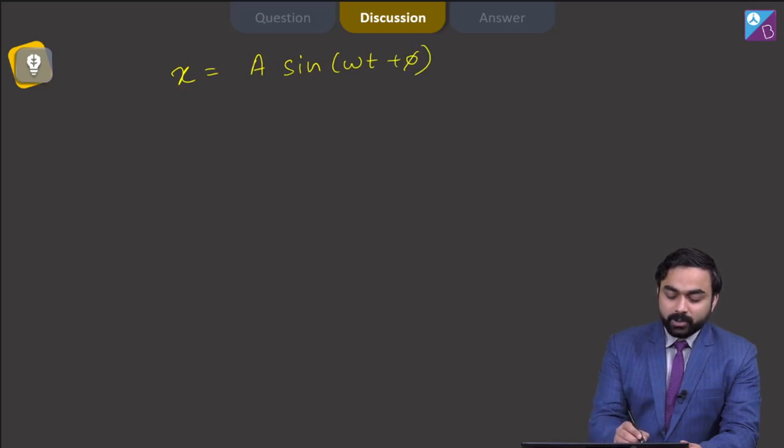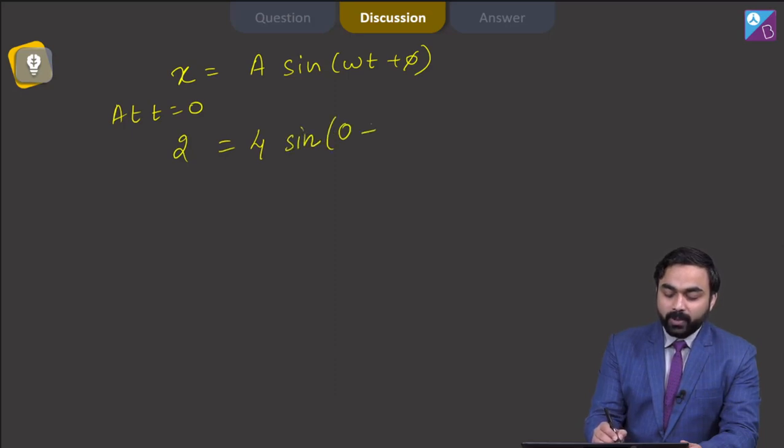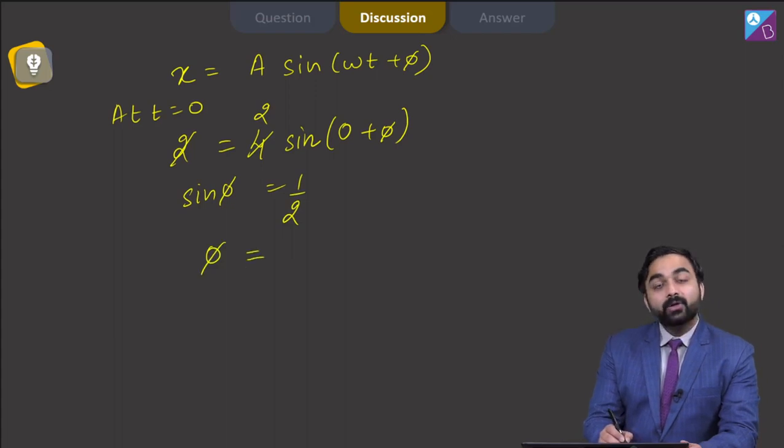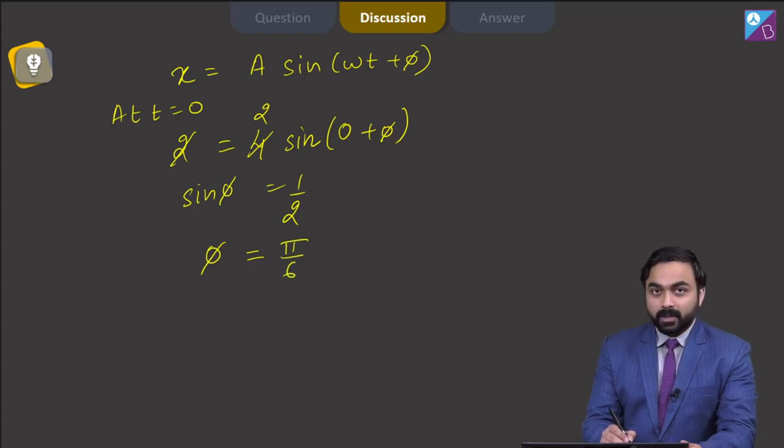At t is equal to 0, x is equal to 2, so 4 sin omega t will be 0 plus phi. This will cancel out and sin phi would come out to be 1 by 2, which will give me the value of phi or initial phase to be equal to pi by 6.